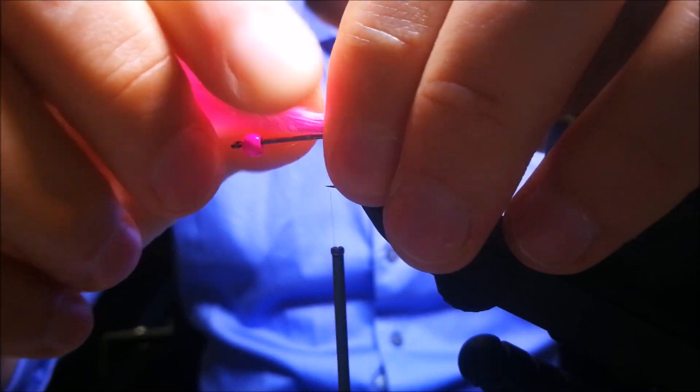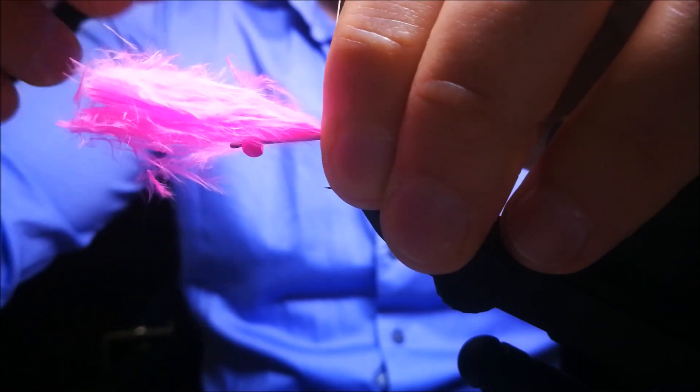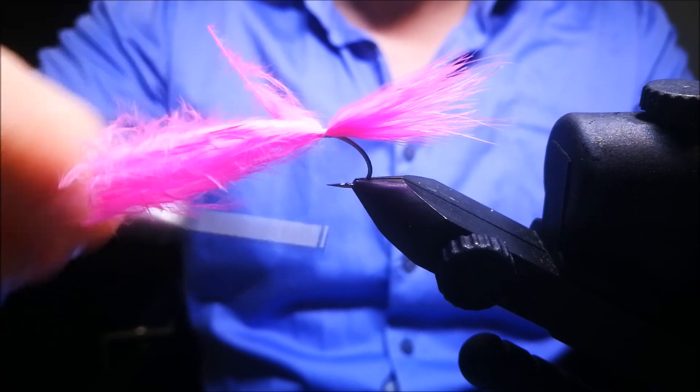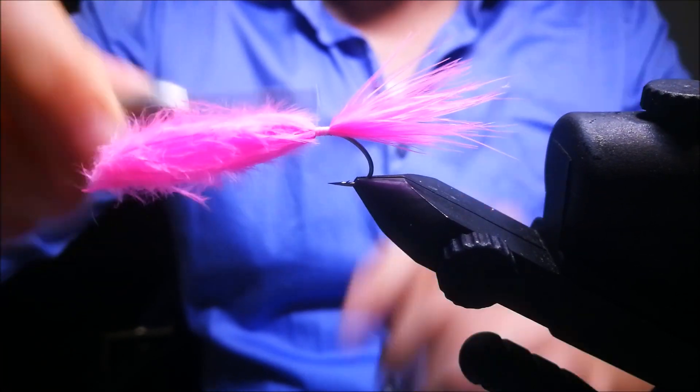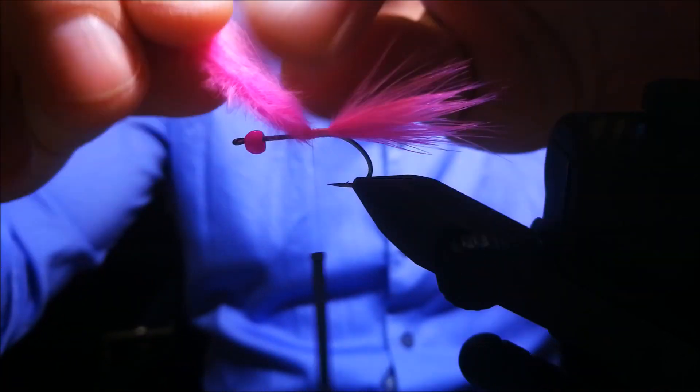Now get some marabou fibers out and measure them to be the length of the hook. This is gonna be underneath the circle strip to hide the skin itself. Just tie it down, but leave two millimeter space behind the bead.